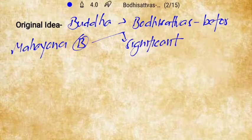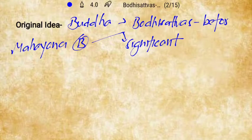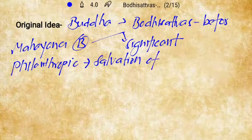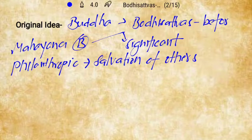These Bodhisattvas were the monks of Mahayana Buddhism, and their significance arose with the emergence of Mahayana Buddhism. They were considered philanthropic beings because they used to work for the salvation of others before working on their own salvation. They were at the verge of attaining salvation but would help others attain it first.